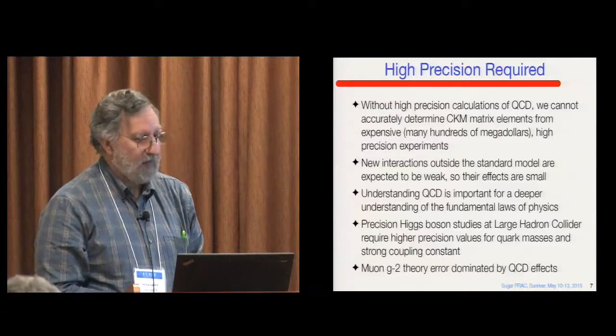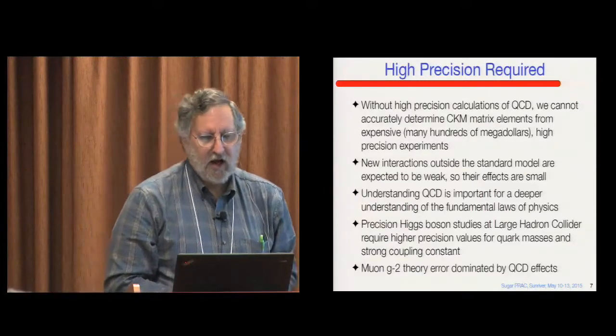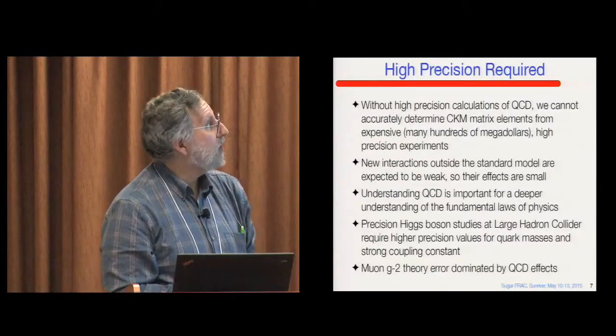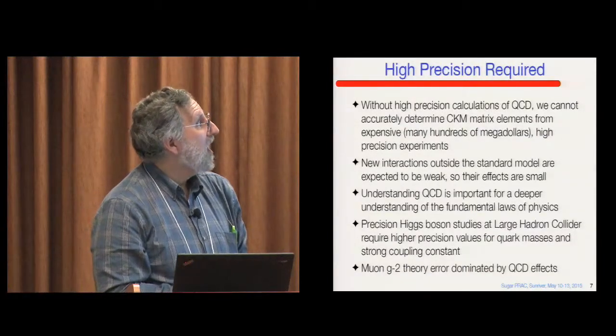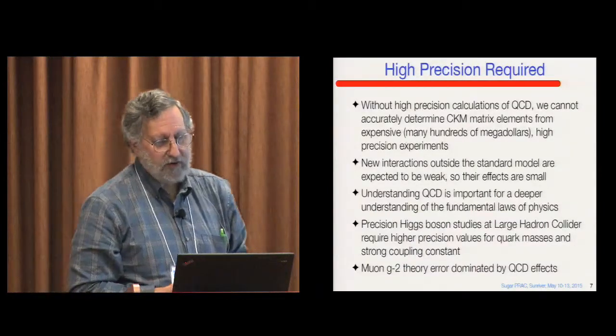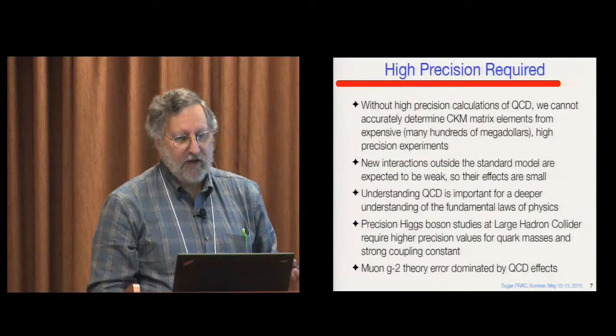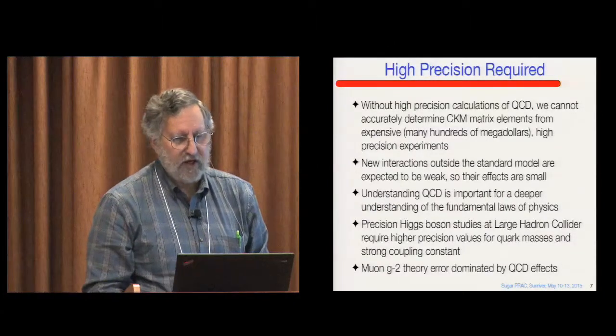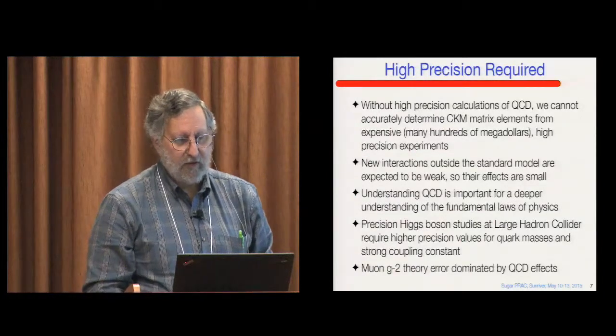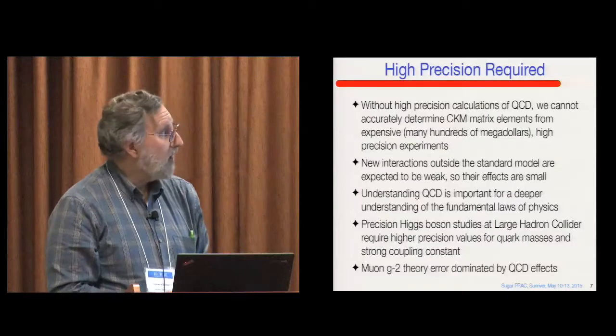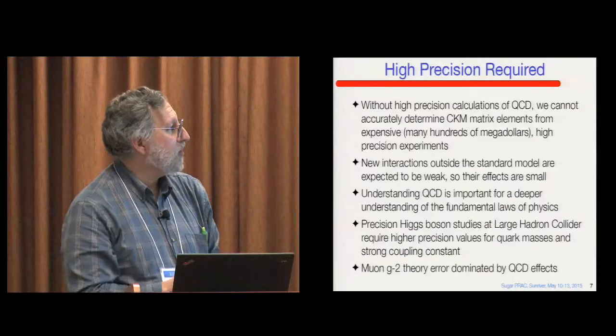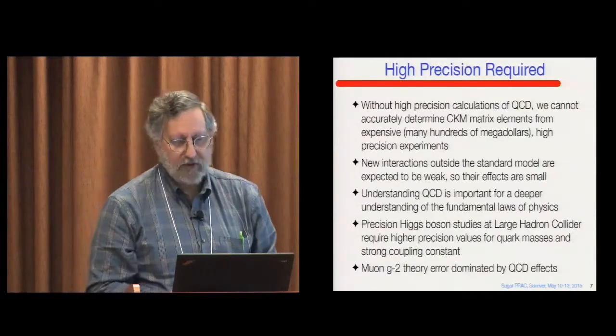However, doing that requires high precision because we have to very accurately get these matrix elements. And hopefully I will show you later some examples of that. And the experiments to measure these decays cost hundreds of mega dollars. And if we don't provide the QCD effects, you can't get the actual interpretation of that in terms of the theory and the CKM matrix elements. And again, high precision is important because any new interactions are weak. If they weren't, we probably would have seen them already.